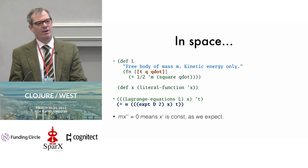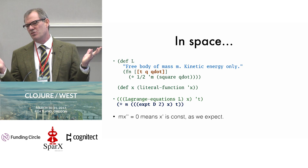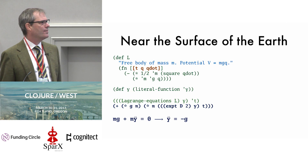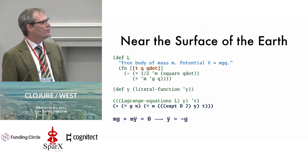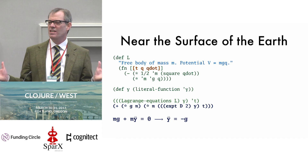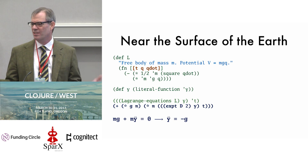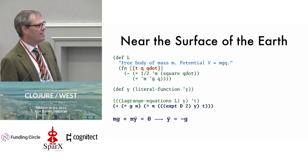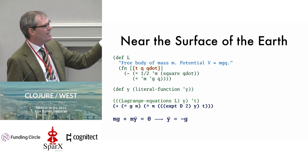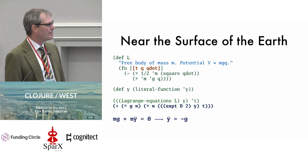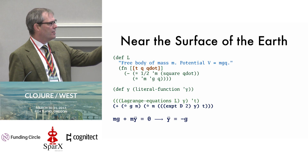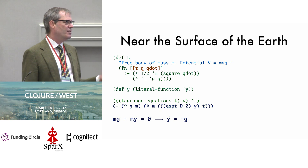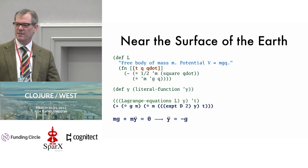Any physics class would show you the shortest distance between two points is a straight line — we already knew that. So let's add a potential. I change my L function to include kinetic energy minus mgh — the only thing I remember from physics in college. I subtract m times g times the height coordinate q from my one-half mv squared. With a literal path function y, what comes back is: mg plus m times y double-prime equals zero. Rearranging, y double-prime equals minus g. It almost begins to feel like this is working.